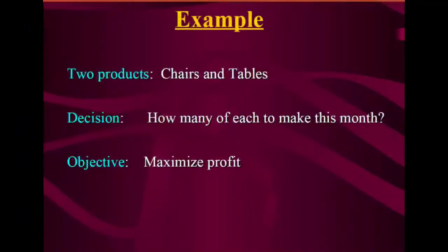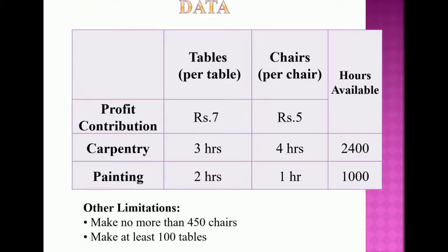Let us look into a basic and simple problem. We have two products — chairs and tables. The decision to be made is how many of each to produce in a month. The major objective is to maximize the profit.